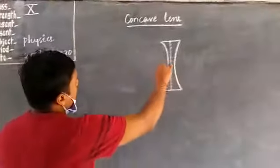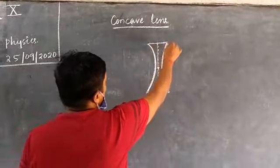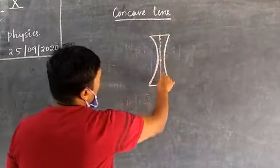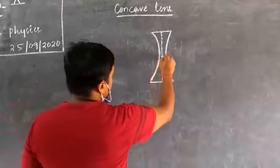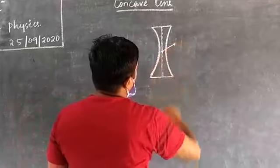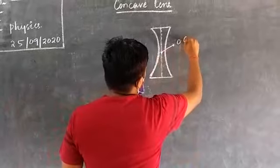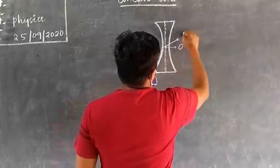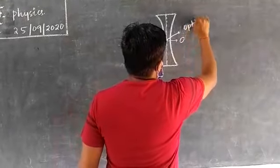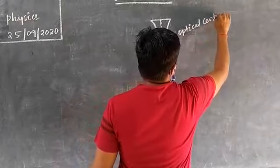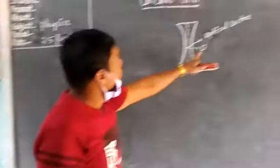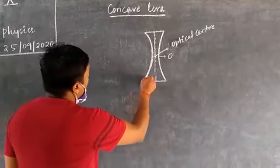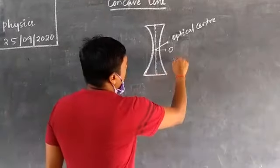The concave lens looks like this — the core surface is inverted. This is known as the concave lens. In this case, this is the optical center. The optical center is always divided by a wall. This concave lens is also known as a diverging lens.